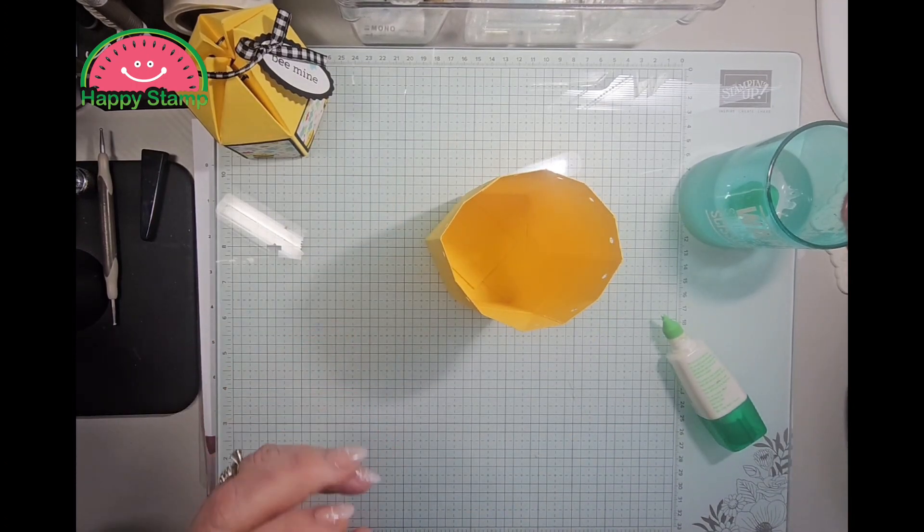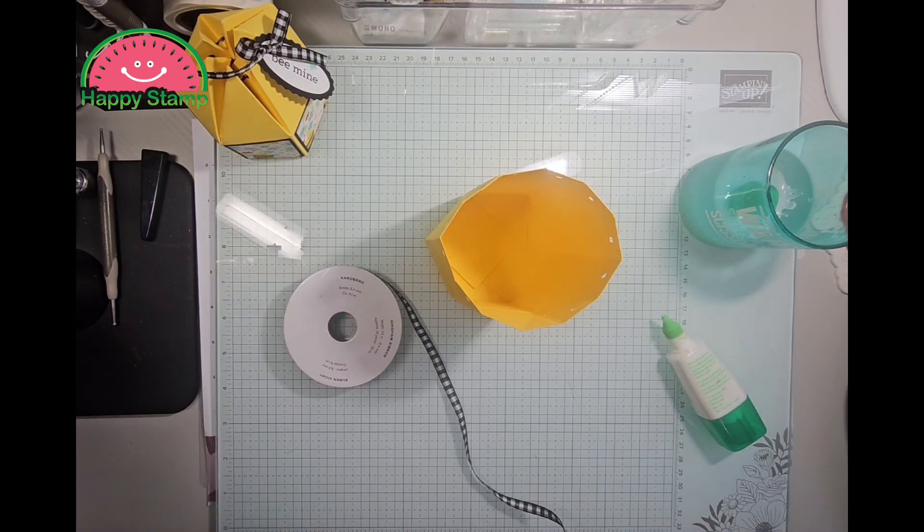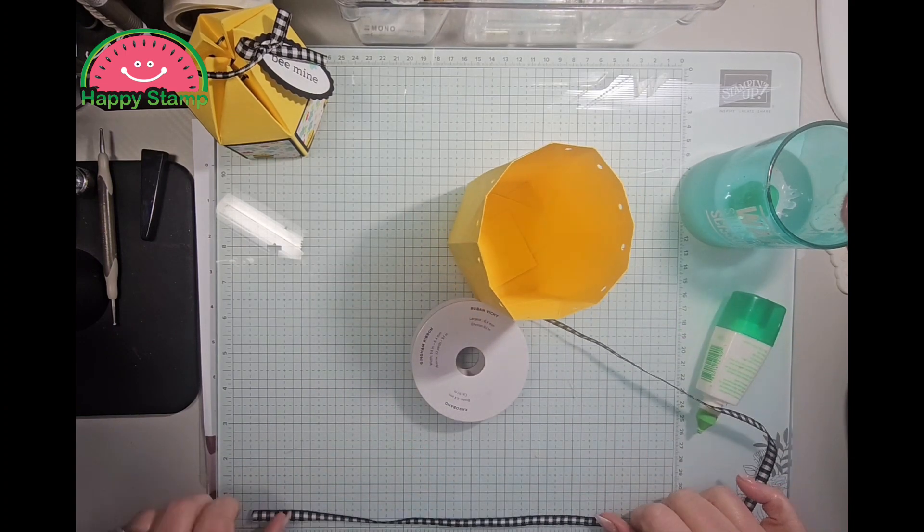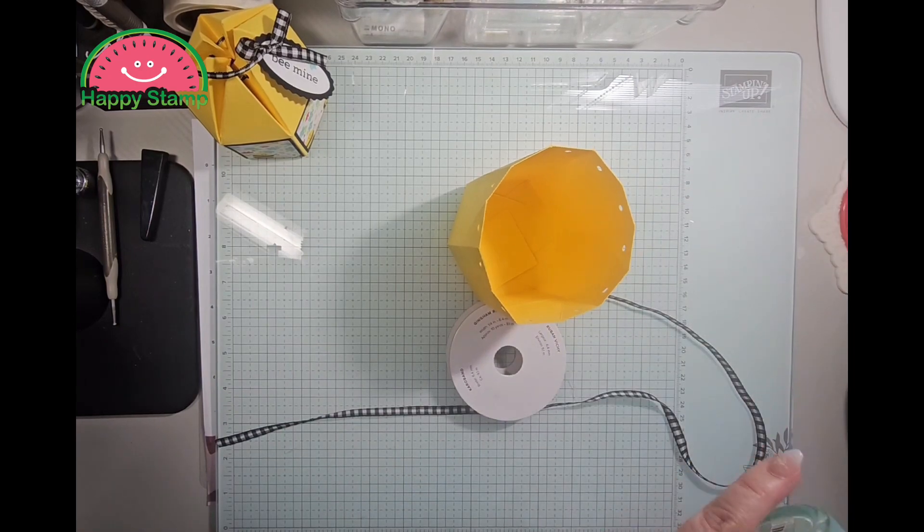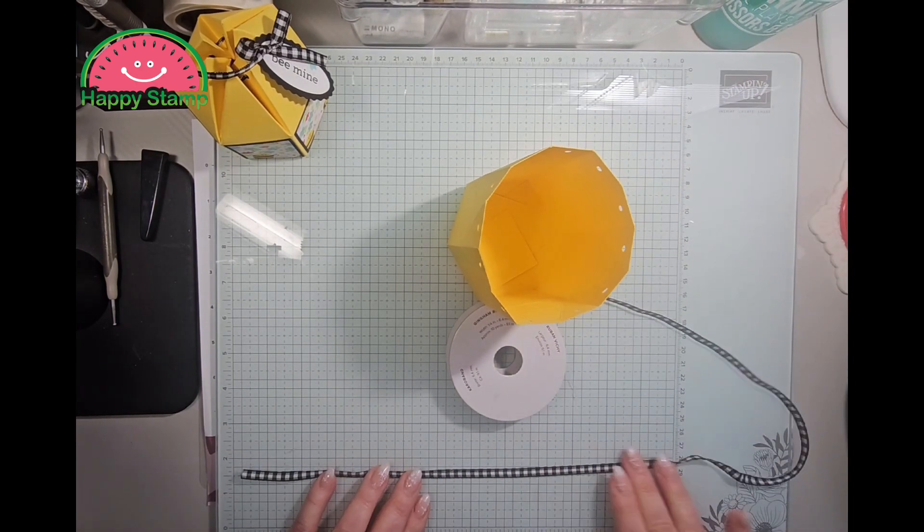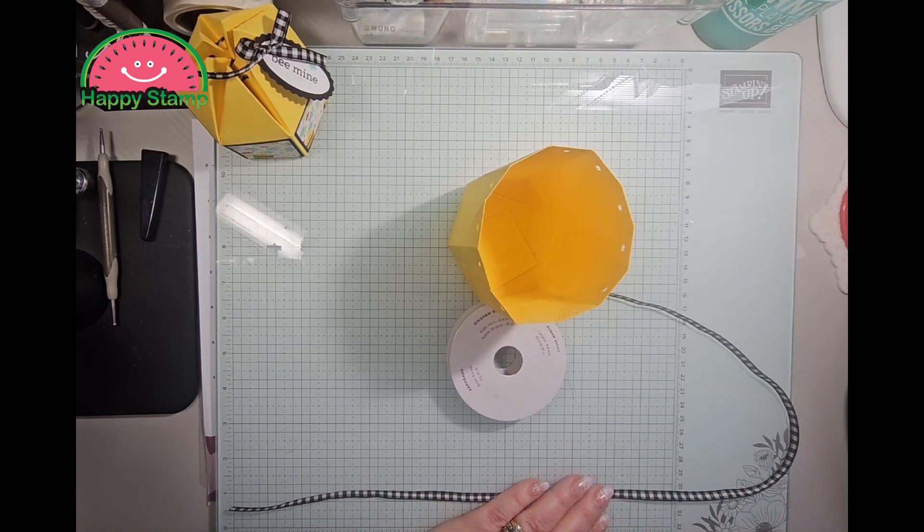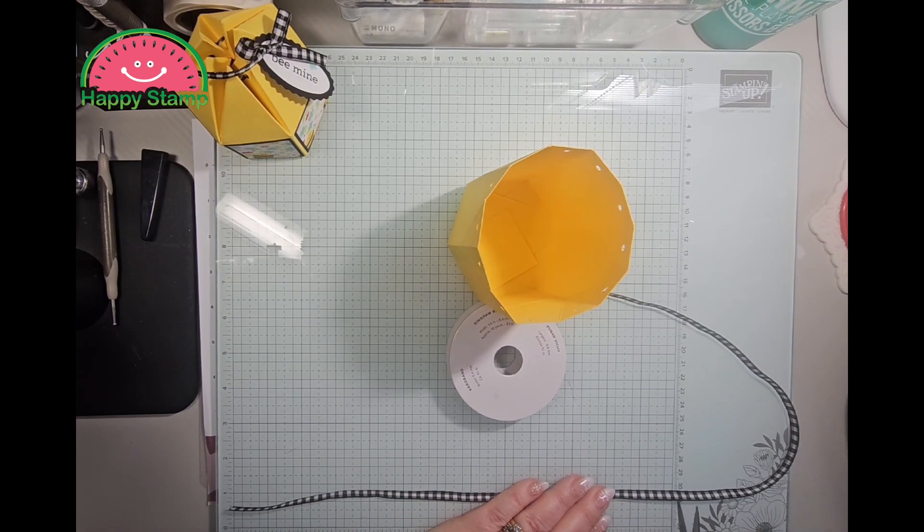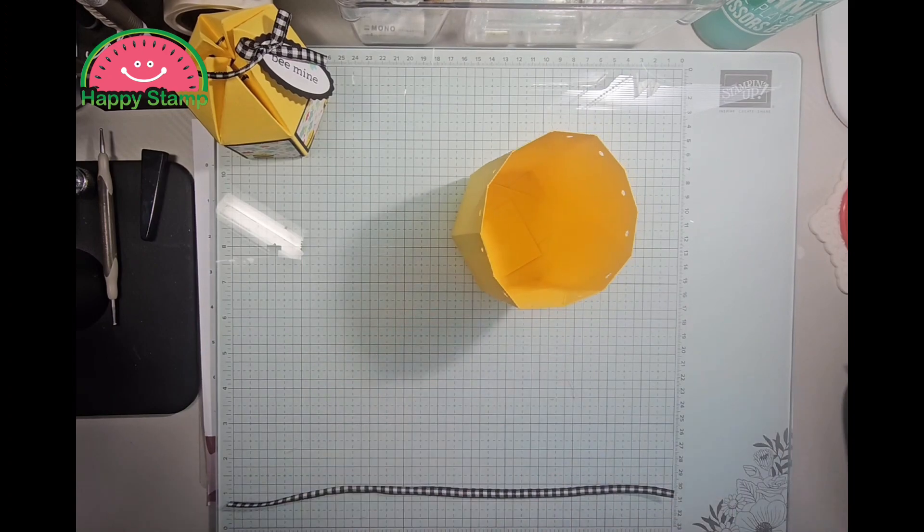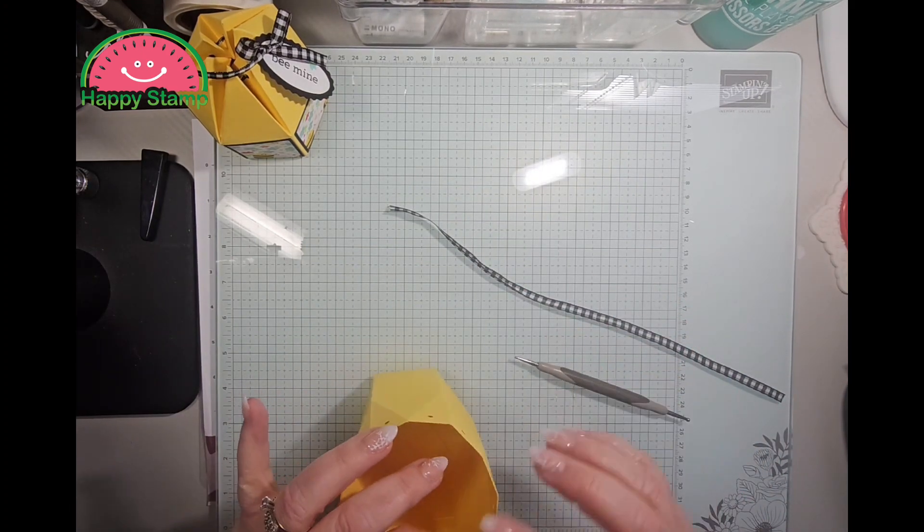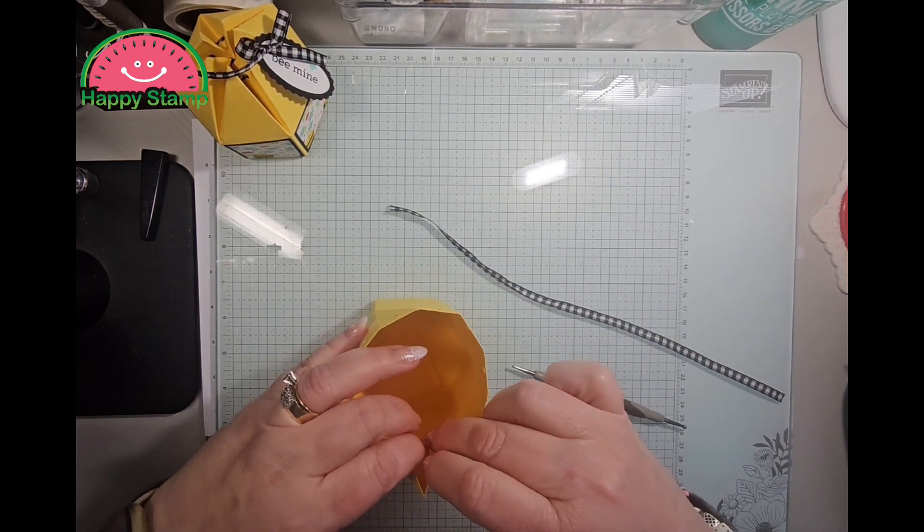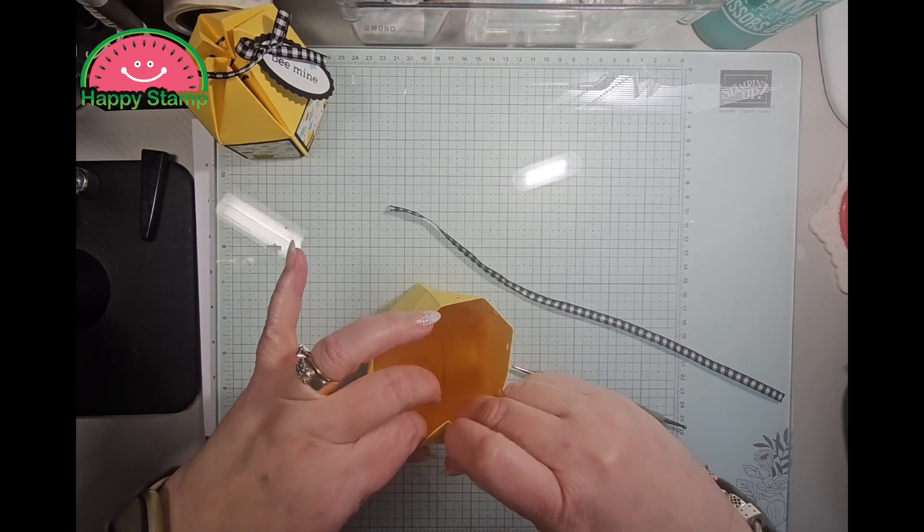All right, now we need a piece of the gingham ribbon. This is the black and white one, not the black and cream one. All right, so I'm going to do about 13 inches. I don't think we need quite that much but it's easier to deal with more than less. Okay, so then we're going to push these all in.